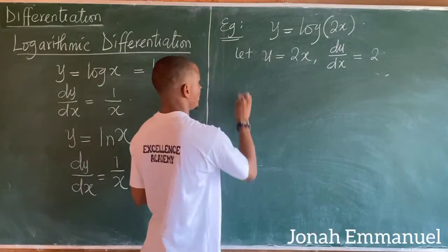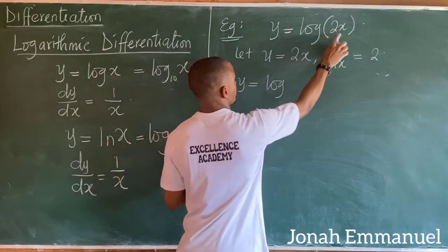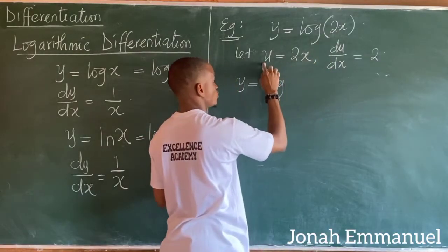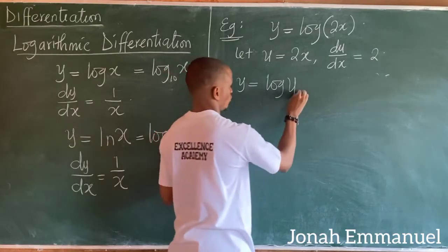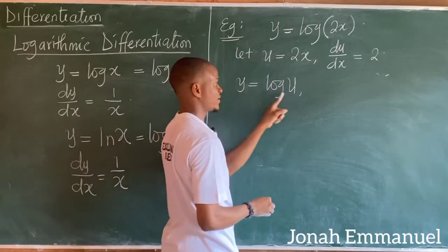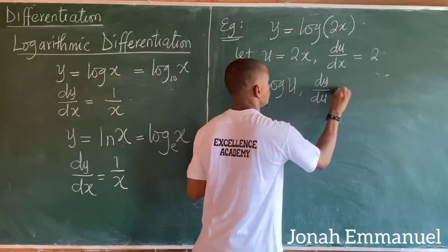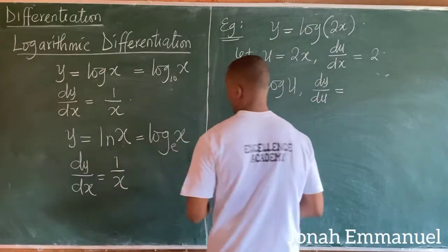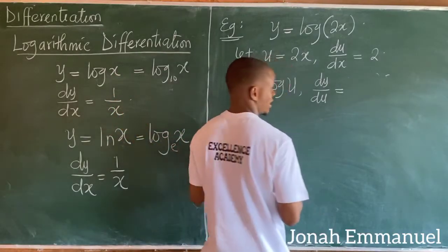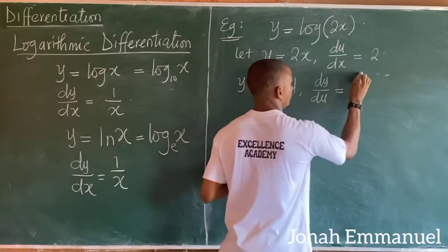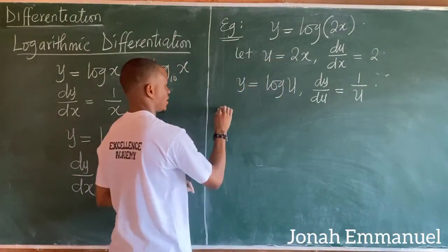Next, y is equal to log 2x, and 2x equals u, so y is now equal to log u. Differentiating y with respect to u: dy over du equals 1 over u, since differentiating log u gives 1 over u.